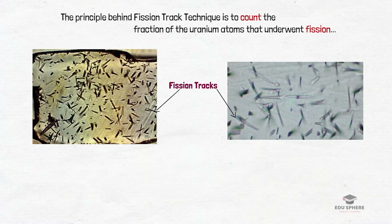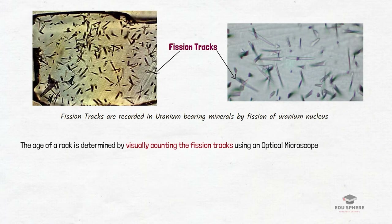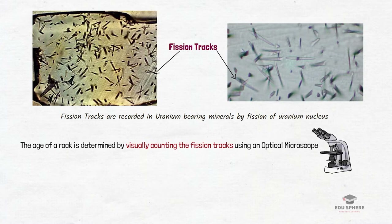Solids which can register such tracks include certain uranium-bearing minerals and glasses. In this method, scientists determine the age of the rock by visually counting the fission tracks of uranium-238. Etched tracks are relatively large, in the range of 1 to 15 micrometers, and counting can be done using optical microscopy, although other imaging techniques are also used.